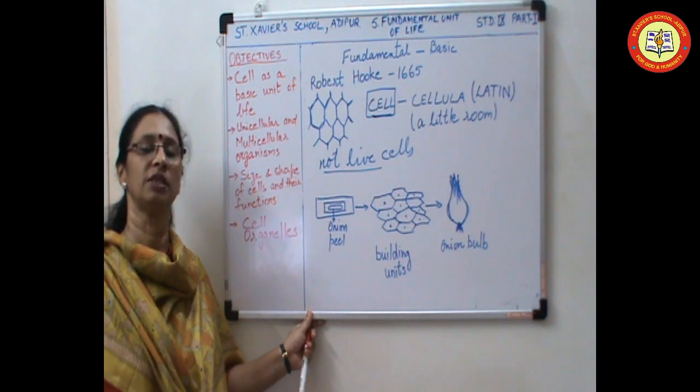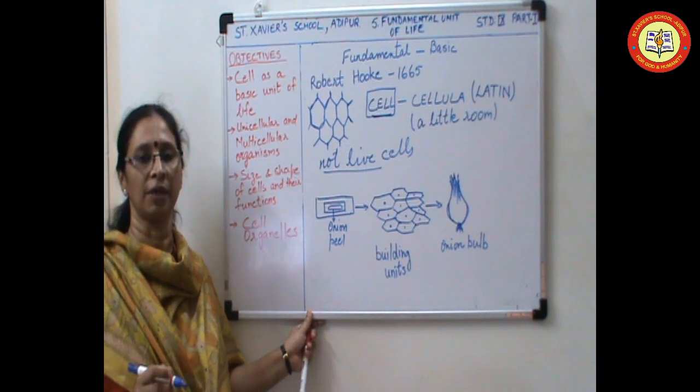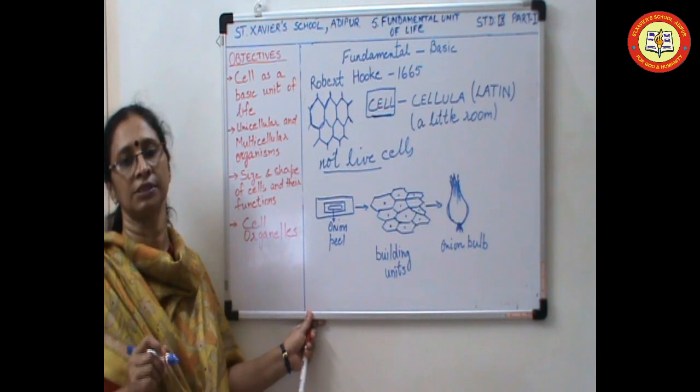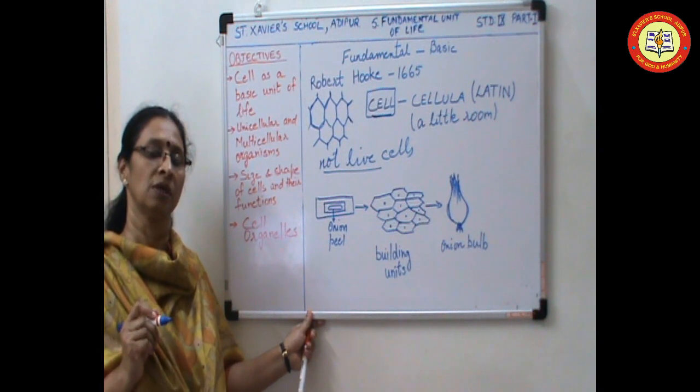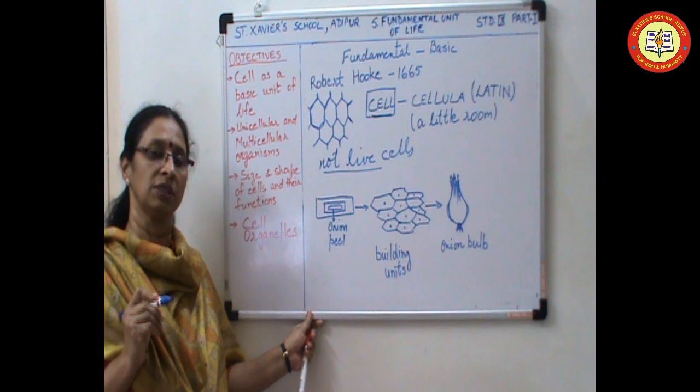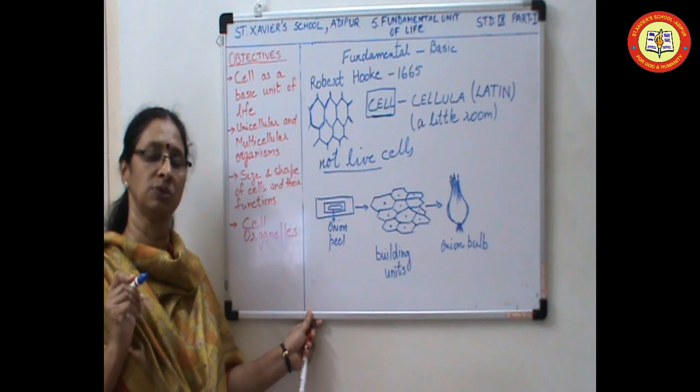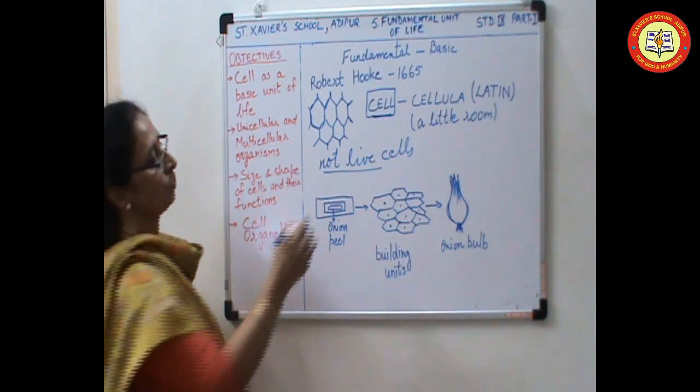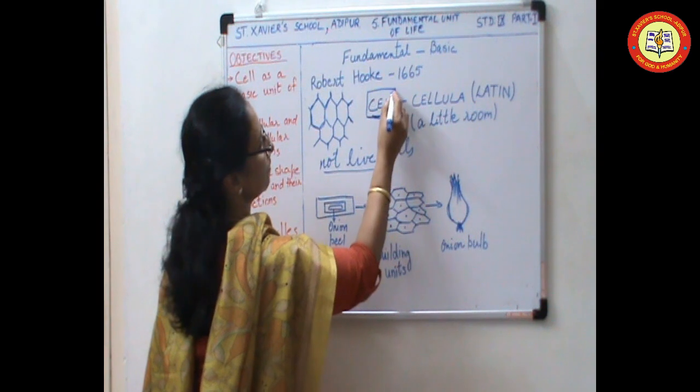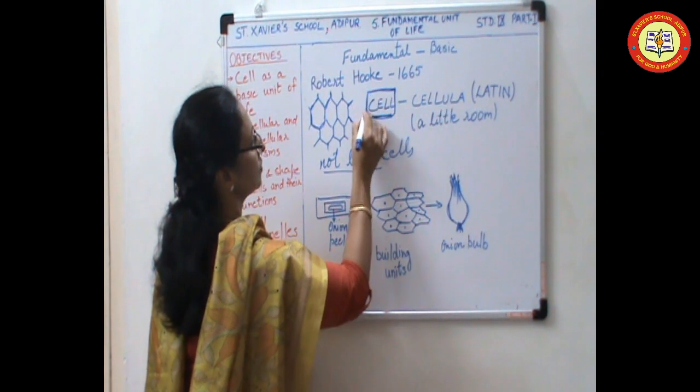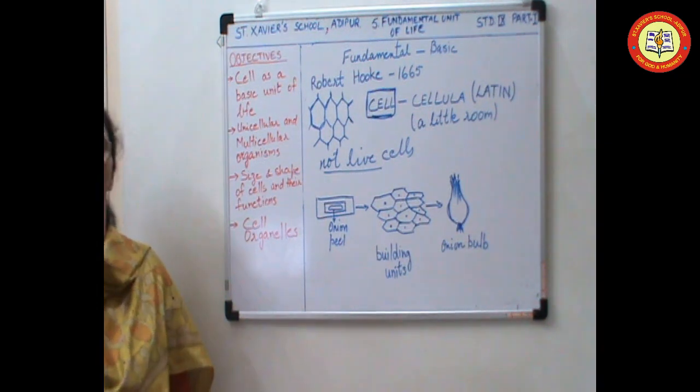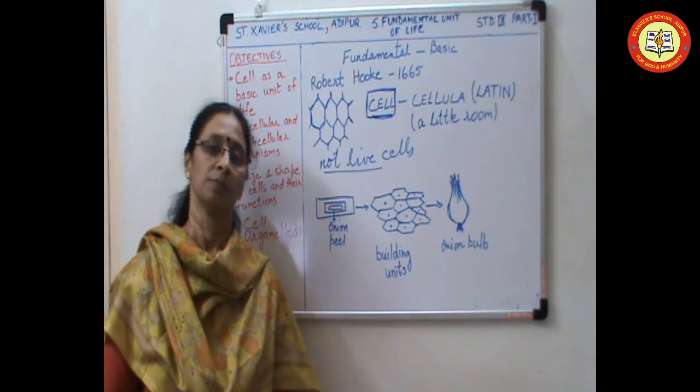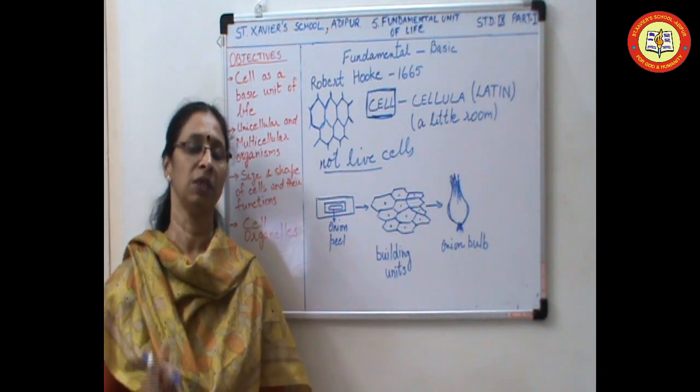Have you ever realized what are living organisms made up of? For a layman, plants are made up of roots, stems and leaves. And animals are made up of flesh and bones. But in turn, what are these bones, flesh, leaves, roots, stems made up of? They are made up of microscopic units called cells. So the body of all the living organisms like bacteria, fungi, plants and animals are made up of cells.